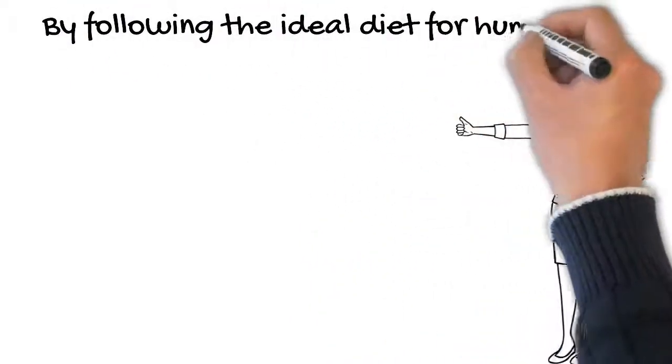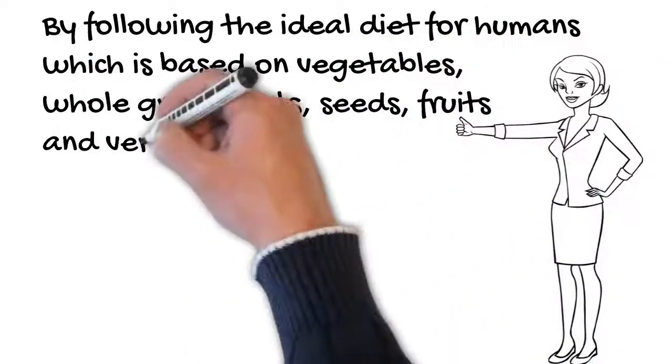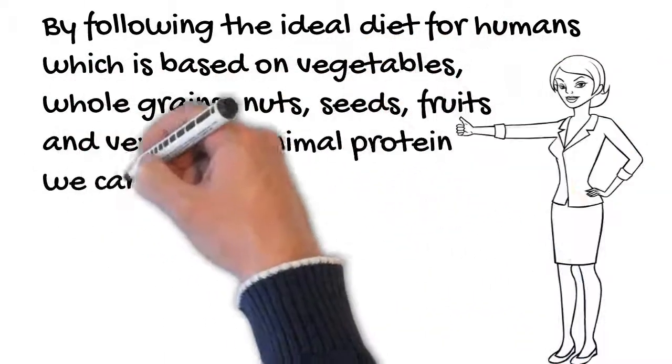By following the ideal diet for humans, which is based on vegetables, whole grains, nuts, seeds, fruits, and very little animal protein, we can